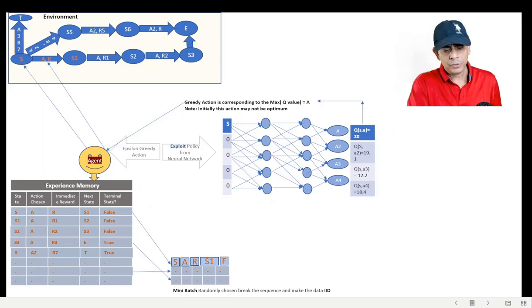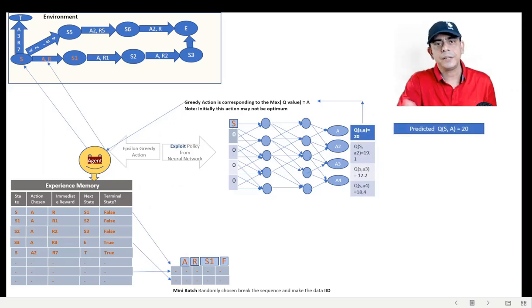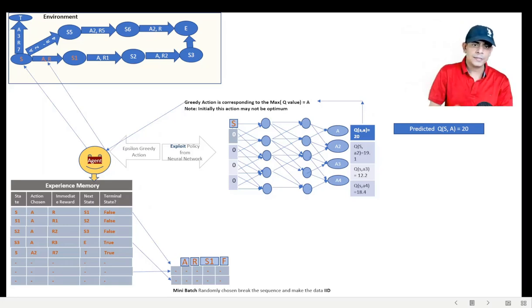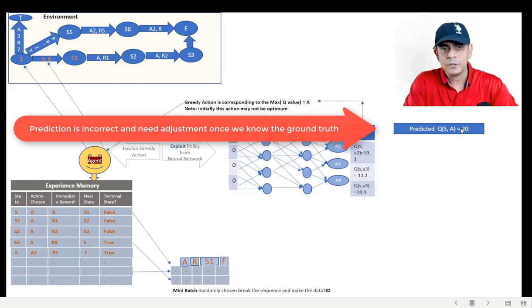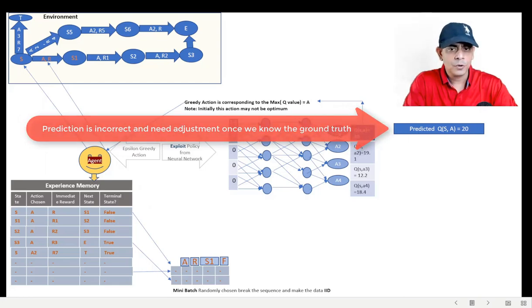And now we are ready to train the neural network. So now the data is ready. Therefore, if we move this S here, apply one-hot encoding, we are going to get Q(S,A), which is the predicted value. But like we said earlier, intuitively we know this value is not correct.